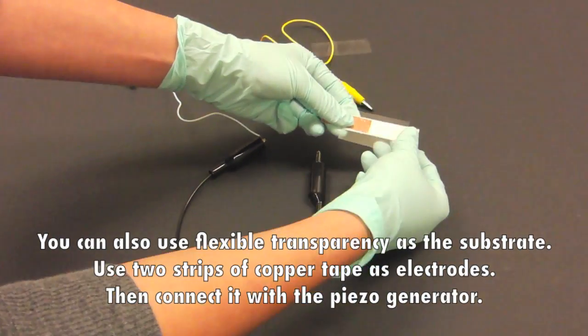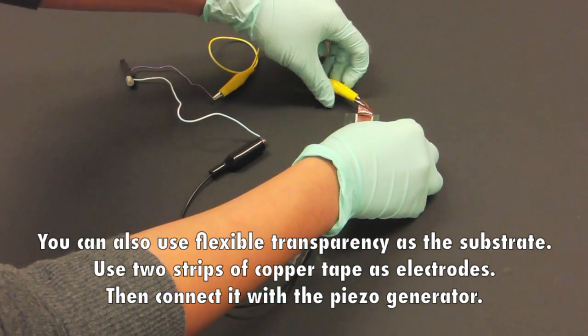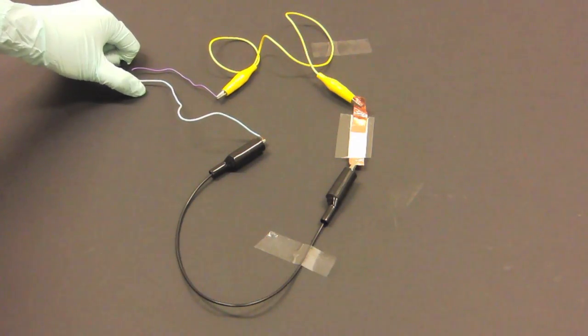You can also use flexible transparency as the substrate. Use two strips of copper tape as electrodes, then connect it with the piezo generator.